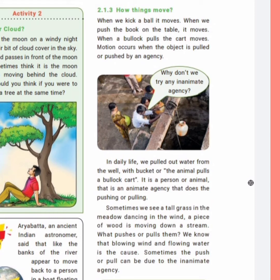How do things move? An animal pulls a bullock cart — that is animate agency. A person or animal, that is an animate agency, is pushing or pulling. We also see tall grass in the meadow dancing in the wind — the grass moves due to an inanimate agency. So forces are push or pull by an animate or inanimate agency.